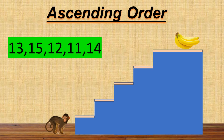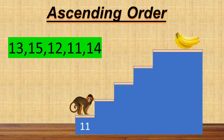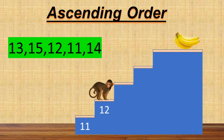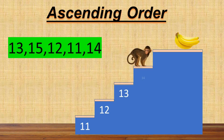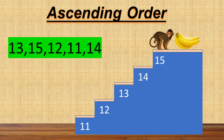Shall we start? Among these given numbers, which number do you think comes first? Yes, very good. It's number 11. The next number will be 12. Next is 13, followed by 14. And lastly, 15.